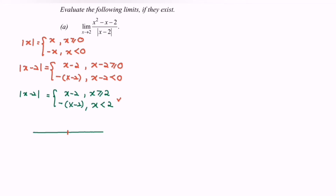Now I'm going to illustrate the situation for the function of the absolute value of x minus 2. Based on the definition, for the domain where x is greater than or equal to 2, that is the right-hand side, the function is x minus 2. For x less than 2, the left-hand side, the function is defined as negative (x minus 2).